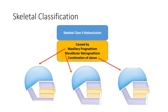Regarding skeletal classification, Class 2 malocclusion can be caused by two factors or a combination of the two: one is the maxilla may be prognathic, or the mandible may be retrognathic, or a combination of both maxillary prognathism and mandibular retrognathism.